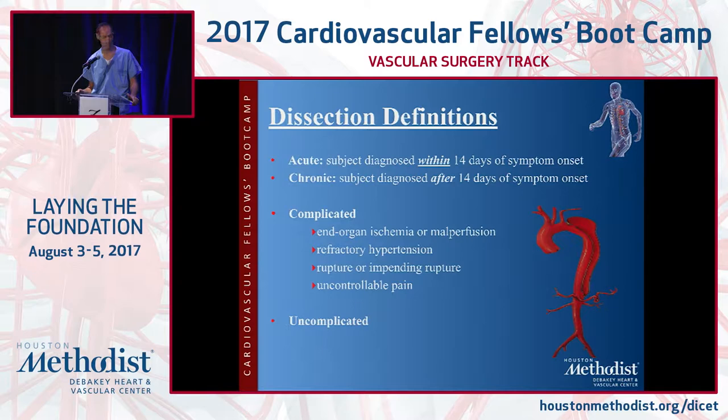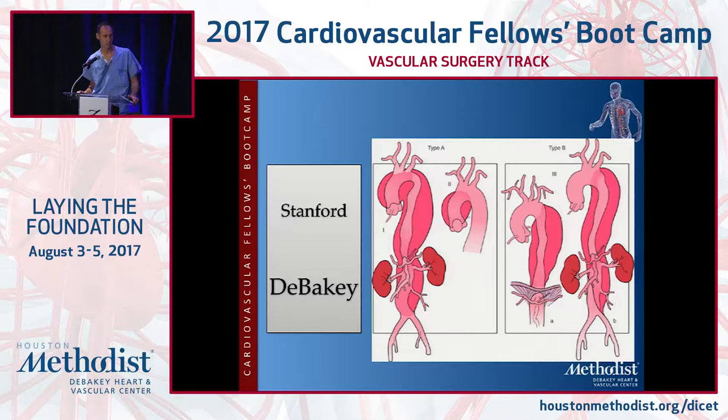We go with really two main classifications. The more simple is Stanford type A, which is anything involving the ascending, and type B is anything involving the descending. The DeBakey classification further divides into types 1 and 2, which involve the ascending, and then 3A and 3B, the B being the more extensive of those two.